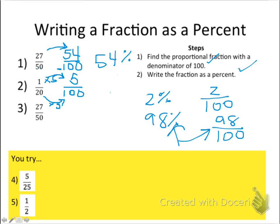Done step 1. Step 2, write the fraction as a percent. Remember, percentages just mean out of 100. So 5 out of 100 means 5%.